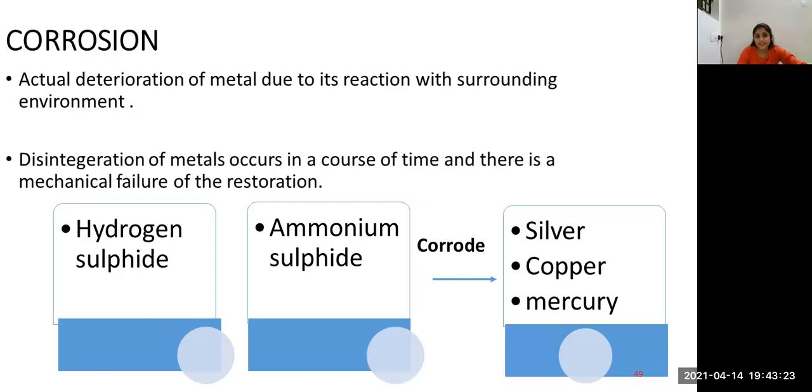Corrosion is the actual deterioration of the metal due to its reaction with its surrounding environment. Disintegration of metals occurs in course of time and there is a mechanical failure of the restoration. Hydrogen sulfide and ammonium sulfide corrode amalgam restoration.